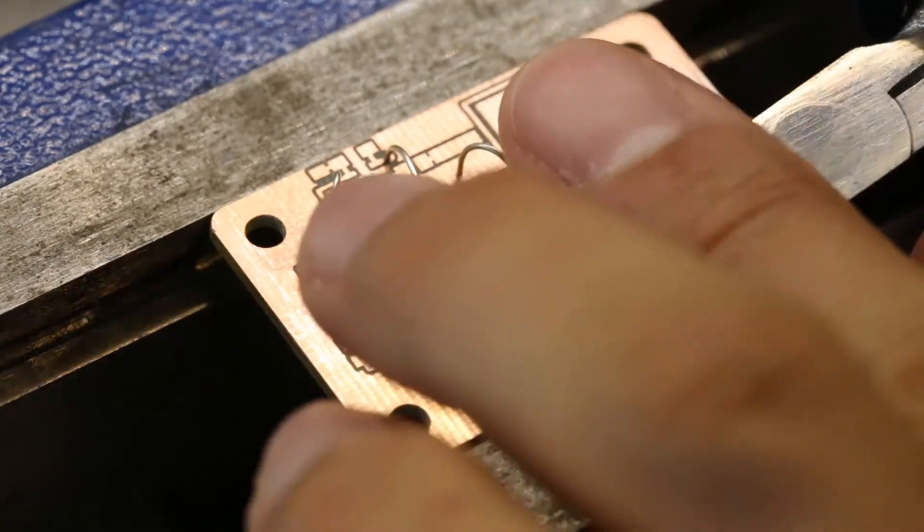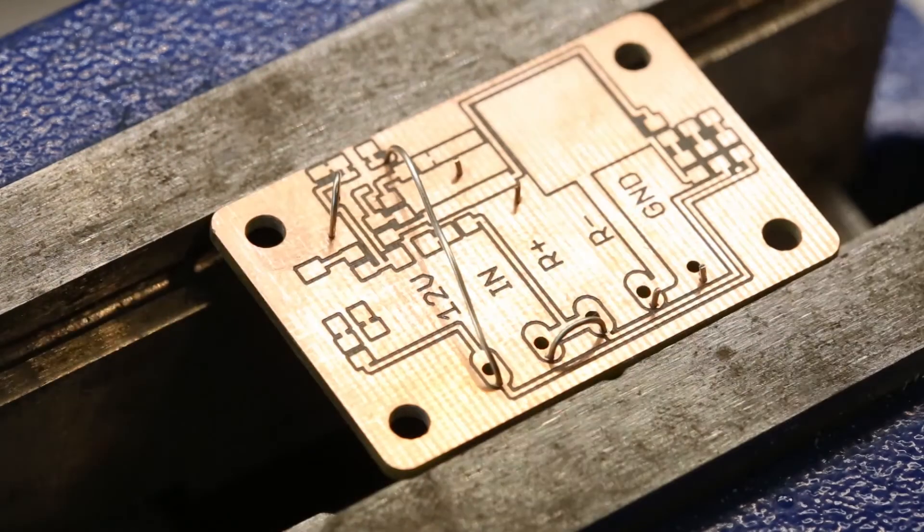I've just flipped the board around and cut off the excess wire so I can more easily access the board for soldering.